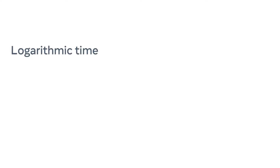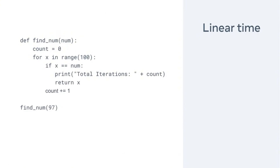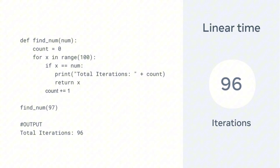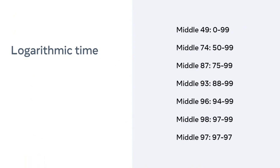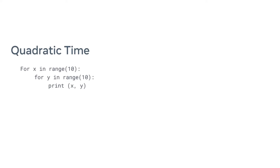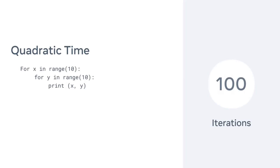Third, a logarithmic time algorithm refers to the running time of the input against the number of operations. I can take a linear approach to find a number out of 100 — say the number is 97. In a linear equation, it will take 96 iterations before it's found. Using a binary search, I can drastically cut down the iterations and find it under seven. The binary search works by splitting the list into two parts each time to check if the target is less than or greater. Fourth, quadratic time refers to a linear operation of each value squared — often a nested loop. The outer loop iterates 10 times and the inner loop also iterates 10 times for each outer iteration, giving 100 total iterations.